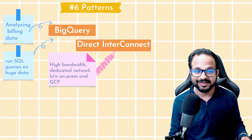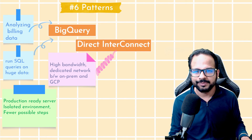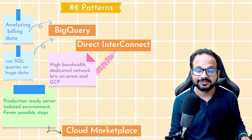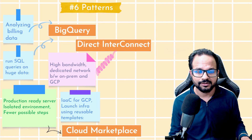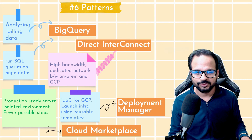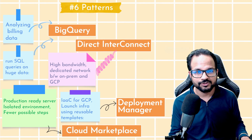If the question mentions a high-bandwidth dedicated network between on-premises and GCP that supports low latency, then the answer would be Direct Interconnect. If the keyword says a production-ready server isolated environment that can be provisioned with the fewest possible steps, then the answer is Cloud Marketplace. If it says infrastructure as code for GCP with the ability to launch infrastructure using reusable templates, then the answer should be Deployment Manager. If the options given are Deployment Manager and Terraform, you should always go with the cloud native solution, which is Deployment Manager in the case of GCP.